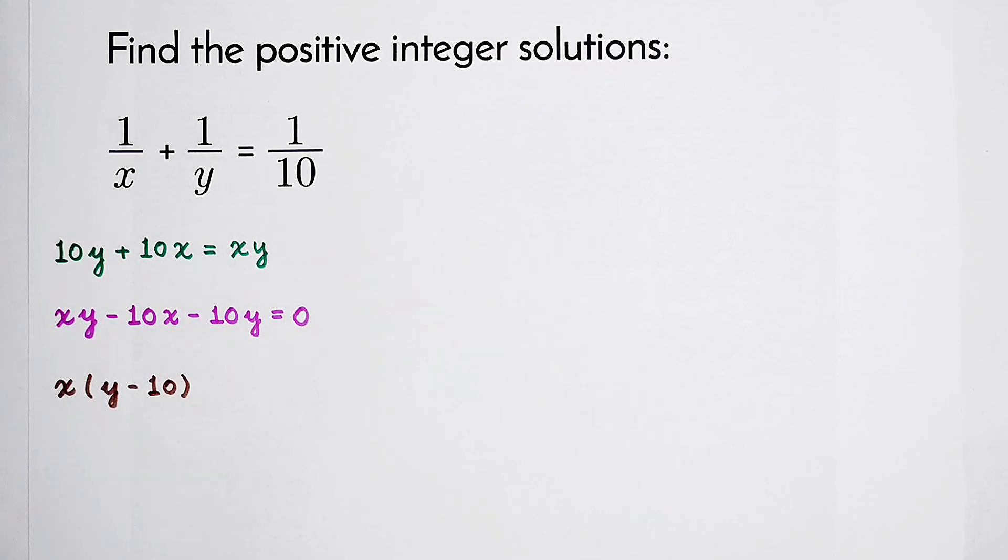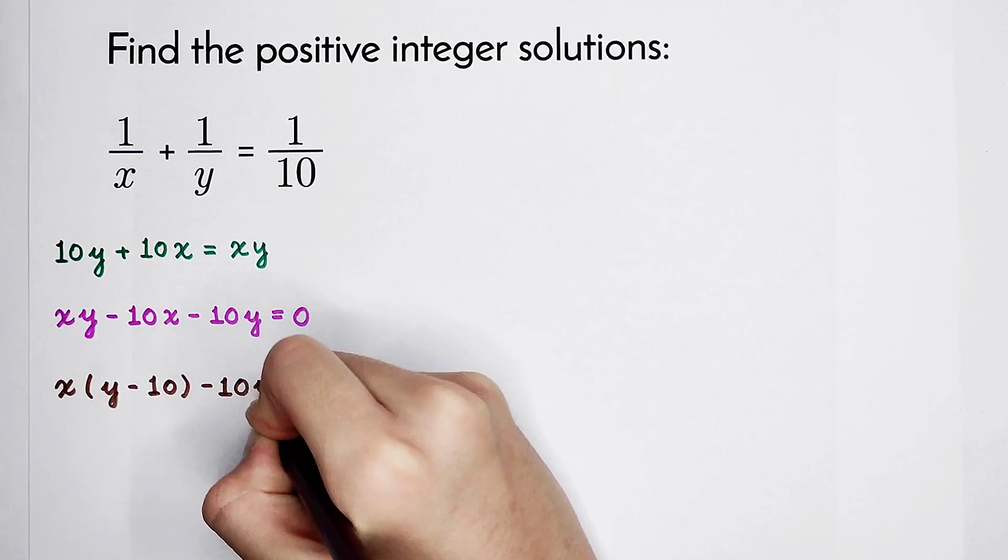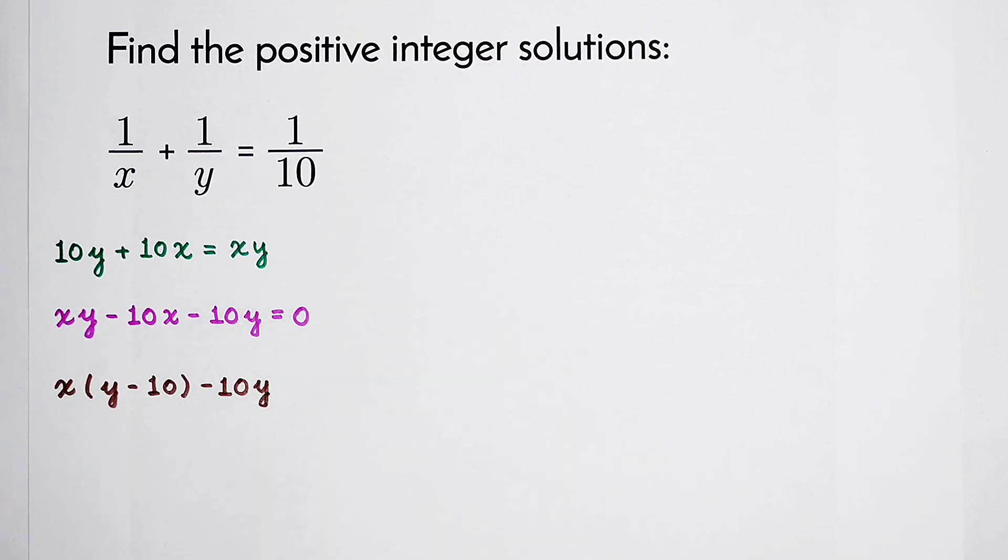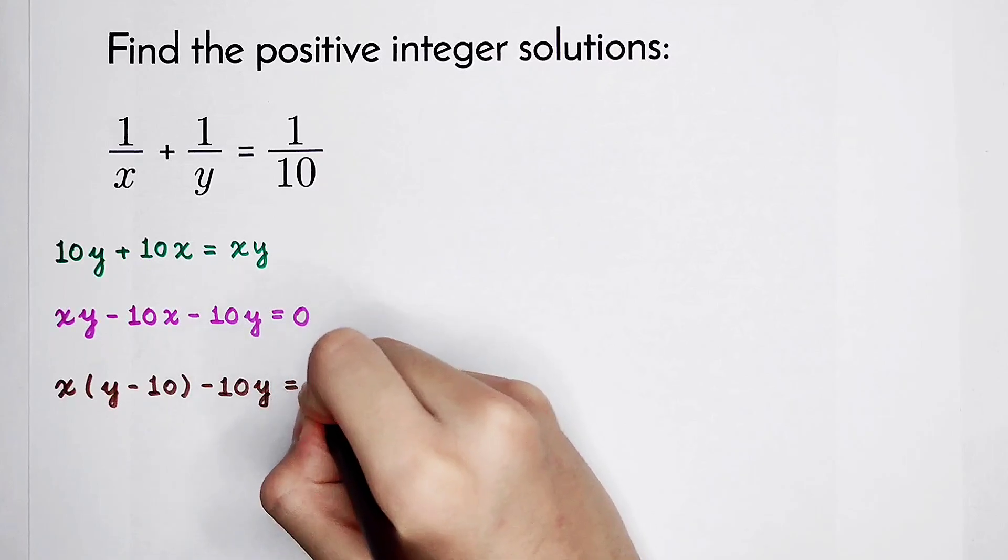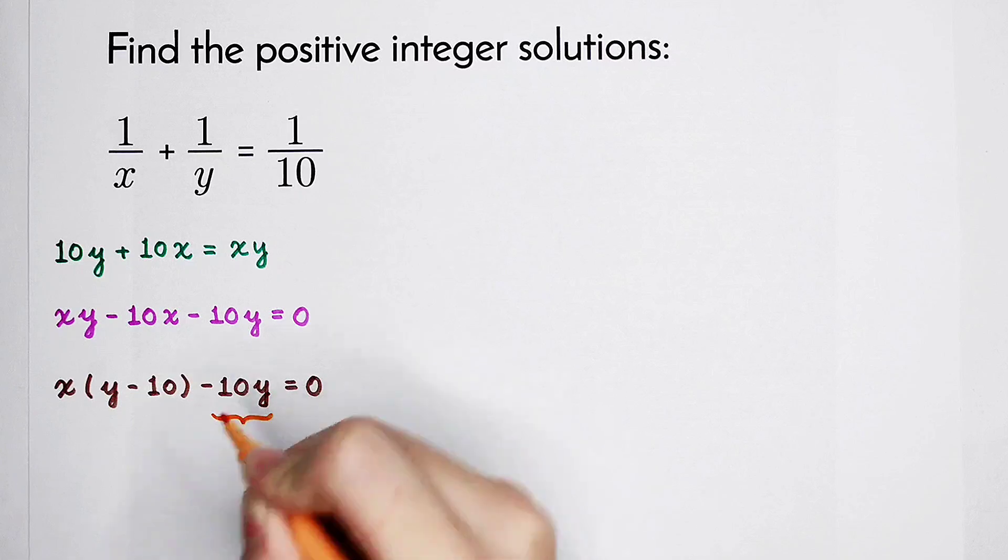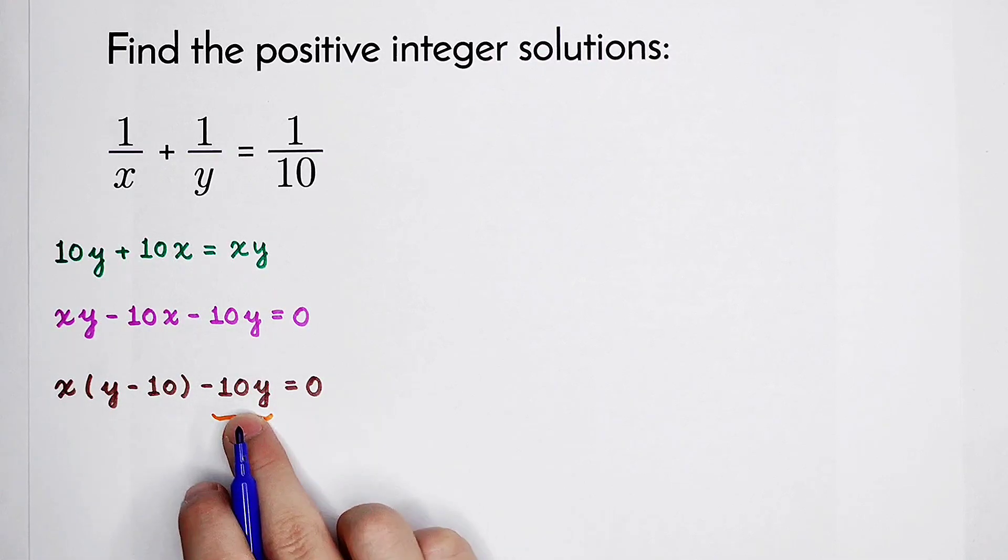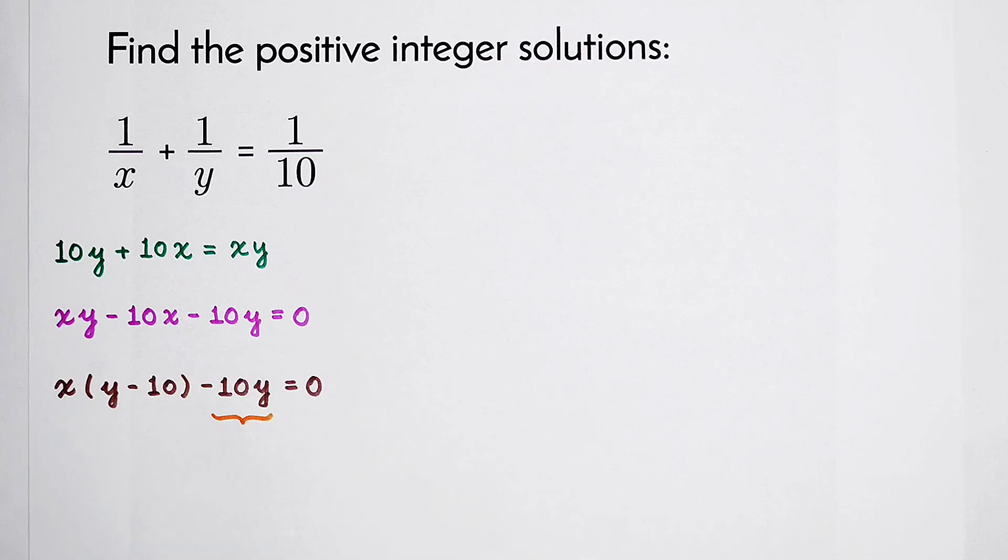But here, there's only a negative 10y left. So now, we have to work with this term. Our only chance is to take out a y minus 10 later. But we know that negative 10 times y doesn't work. That means we lack a number. So let's have a try.